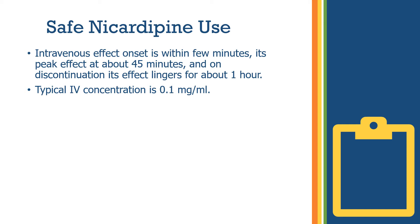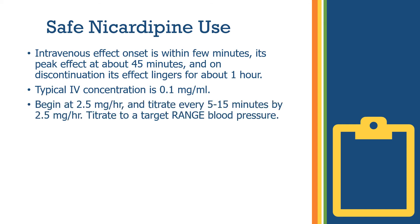The typical intravenous concentration is 0.1 milligrams per milliliter. Begin the infusion at 2.5 milligrams per hour and titrate every 5 to 15 minutes by 2.5 milligrams per hour. Titrate to a target range blood pressure. The intravenous dose range is 2 to 15 milligrams per hour.